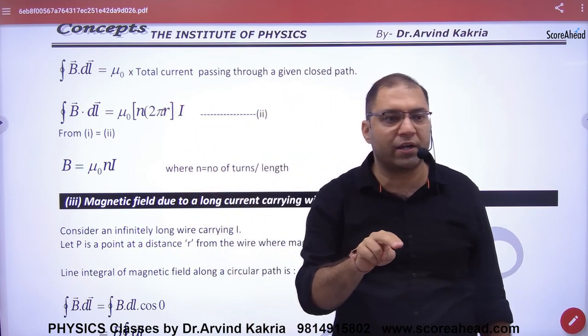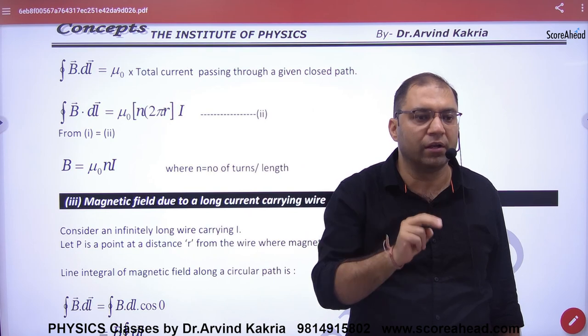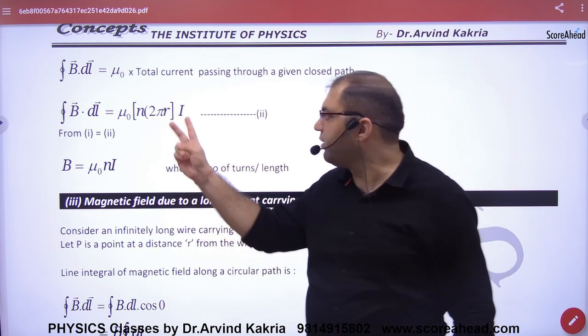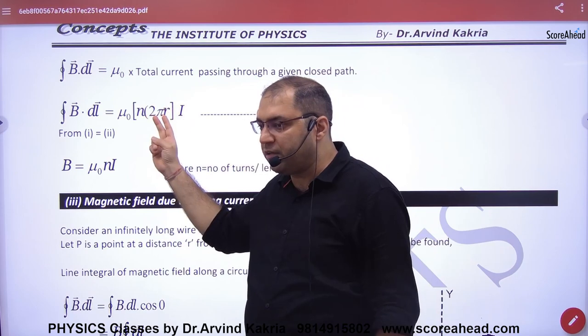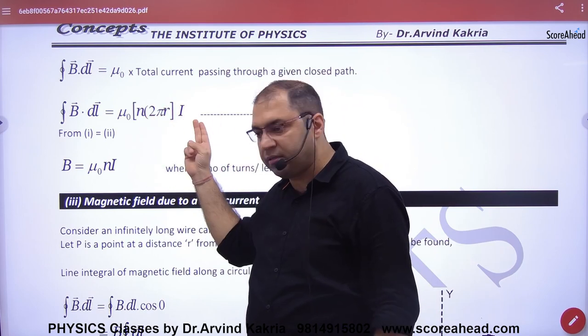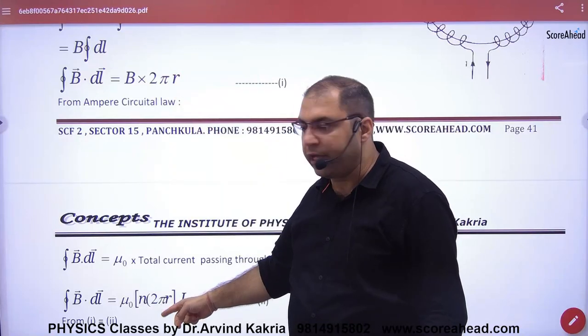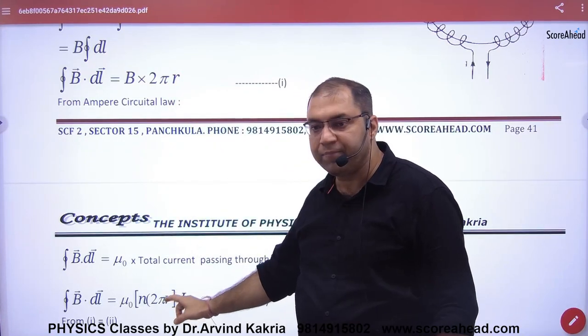So n into 2πR is the number of turns per unit length times length, which equals number of turns. So number of turns into I. Equate this and this: 2πR cancels with 2πR.